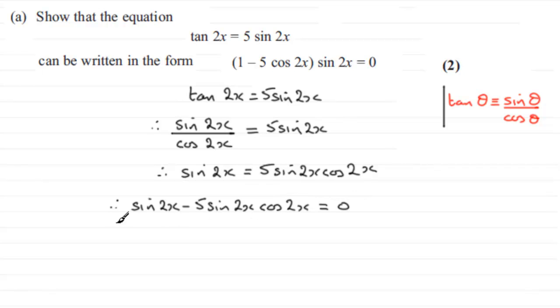And I can pull out a common factor here. The common factor in both this term and this term is sin 2x, so if I pull that out we've got sin 2x bracket, and then we've got 1 for the first term, and then here we've got minus 5 cos 2x, and that's going to equal zero.